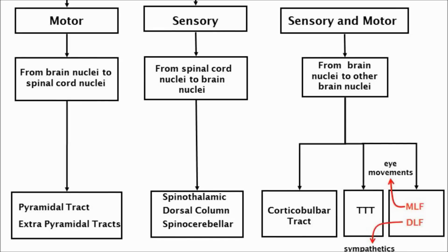First, on the left hand side of this table we have motor tracks that go from the cerebral cortex in the brain to innervate muscles in the body and trunk. The corticospinal tract is for voluntary movement and is often called the pyramidal tract. The reason for this is that the majority of its fibres cross over in a region of the brain stem called the medulla oblongata, and this region is called the pyramids.